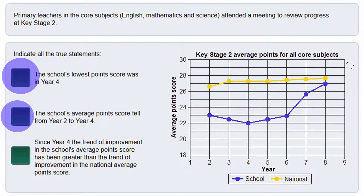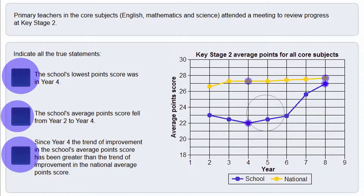Now let's have a look at the third statement. It claims that since year 4 the trend of improvement in the school's average points score has been greater than the trend of improvement in the national points score. Looking at the school first: in year 4 we were at 22 and this rose all the way to 27, so that is an improvement of 5. On the other hand the national seemed to be at about 27.2 and by the end of year 8 they looked to be about 27.8. You can see the climb is nowhere near as great as the school, so statement 3 is also true.